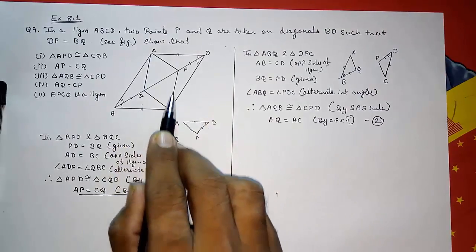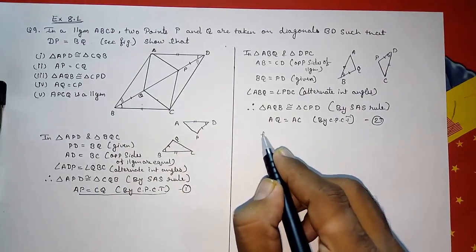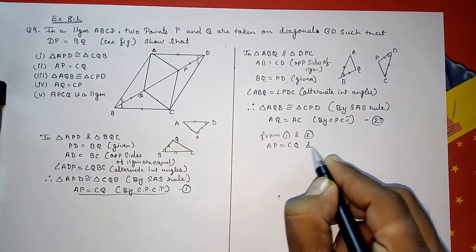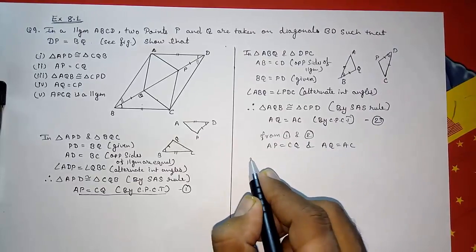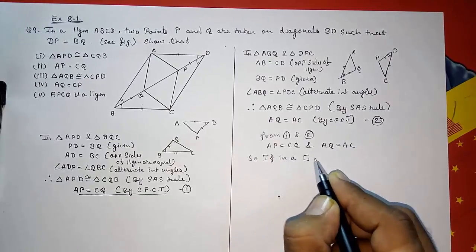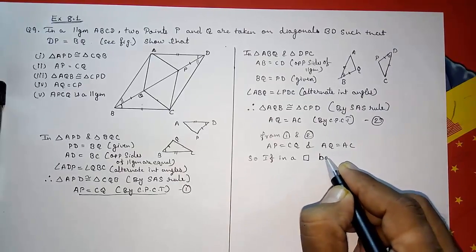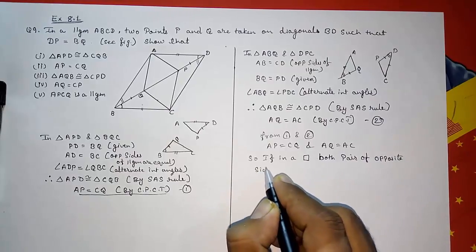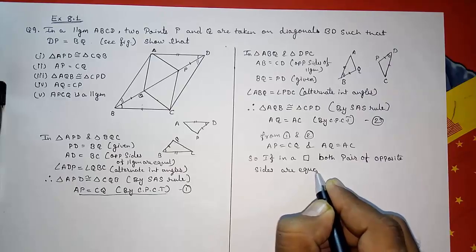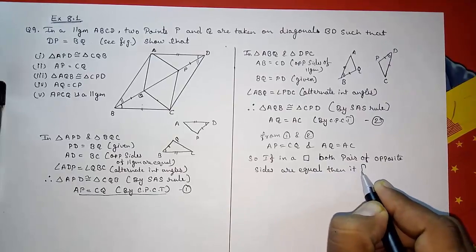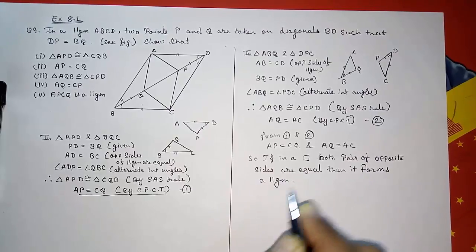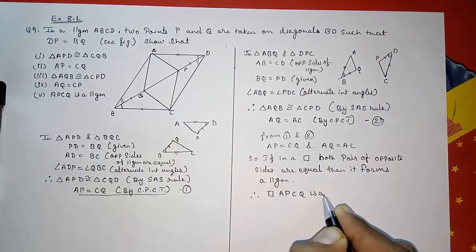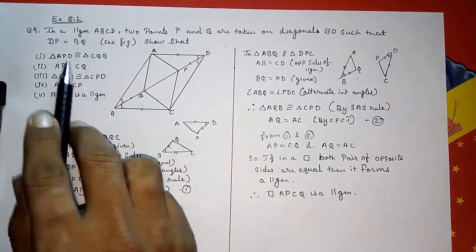Now with the help of these two results I want to prove that the inner quadrilateral is a parallelogram. From Result 1 and Result 2 we get AP equals CQ and AQ equals CP. If in a quadrilateral both pairs of opposite sides are equal, then it forms a parallelogram. Therefore quadrilateral APCQ is a parallelogram.